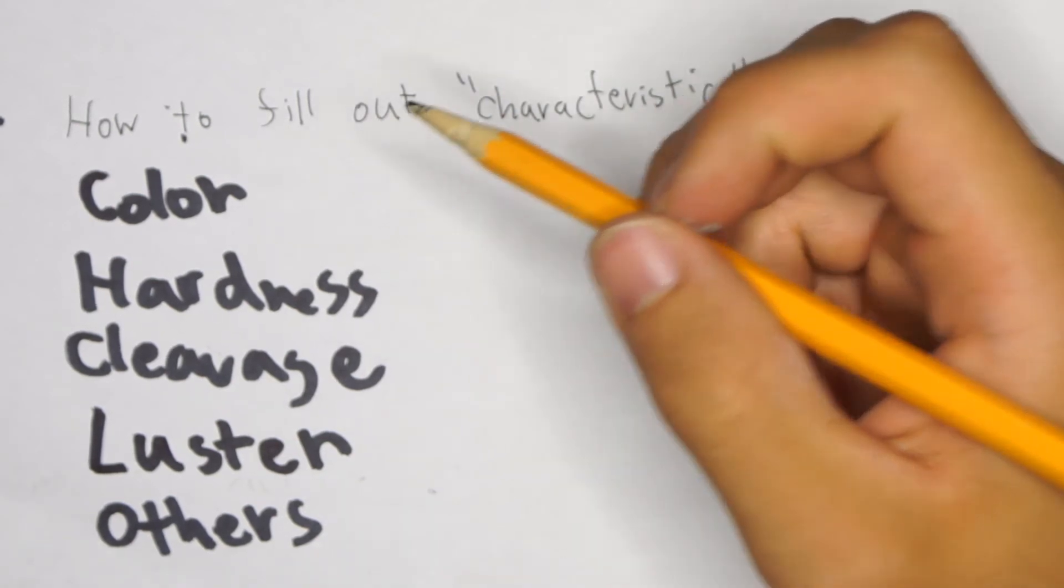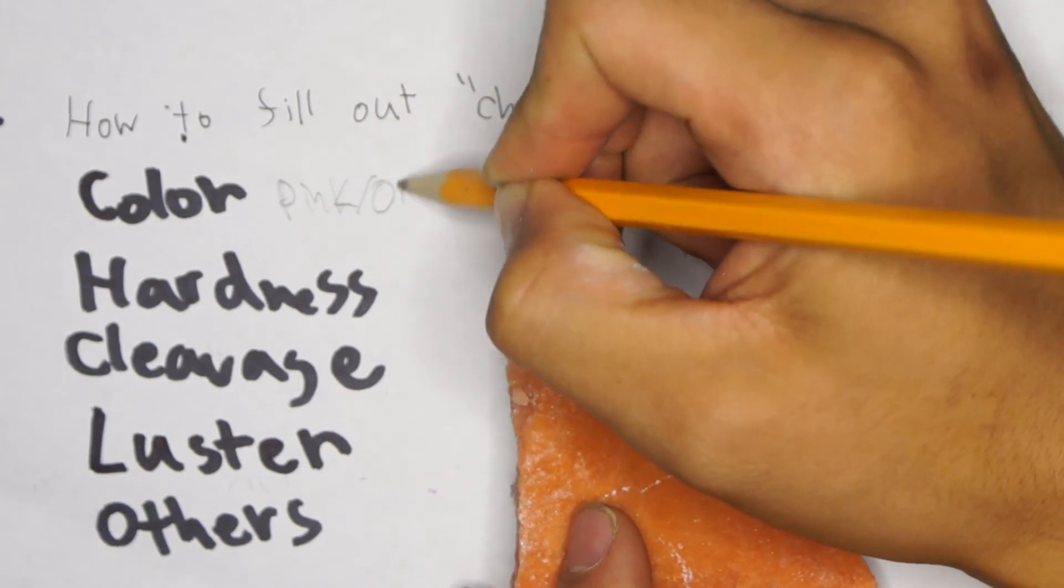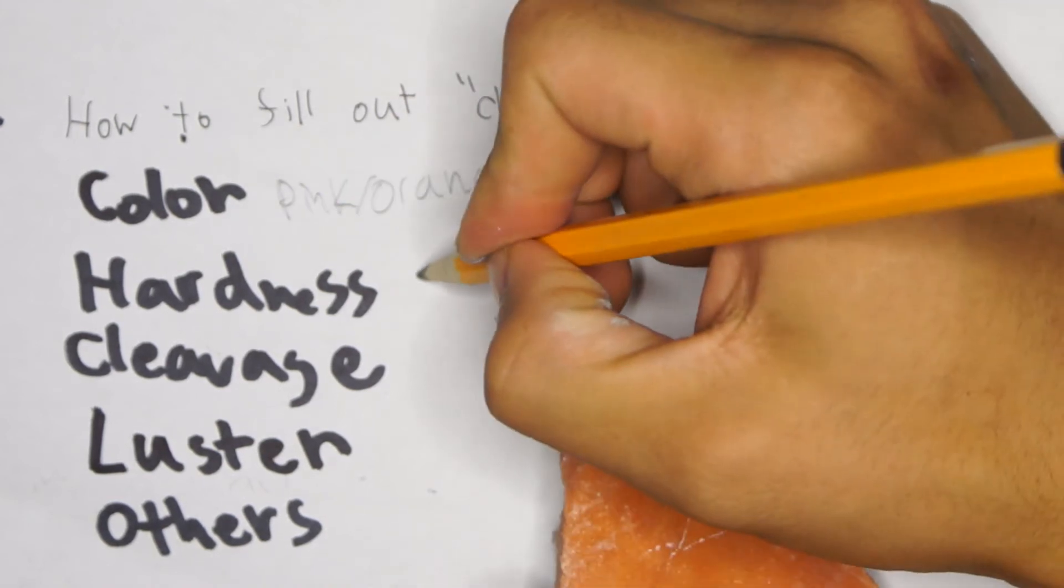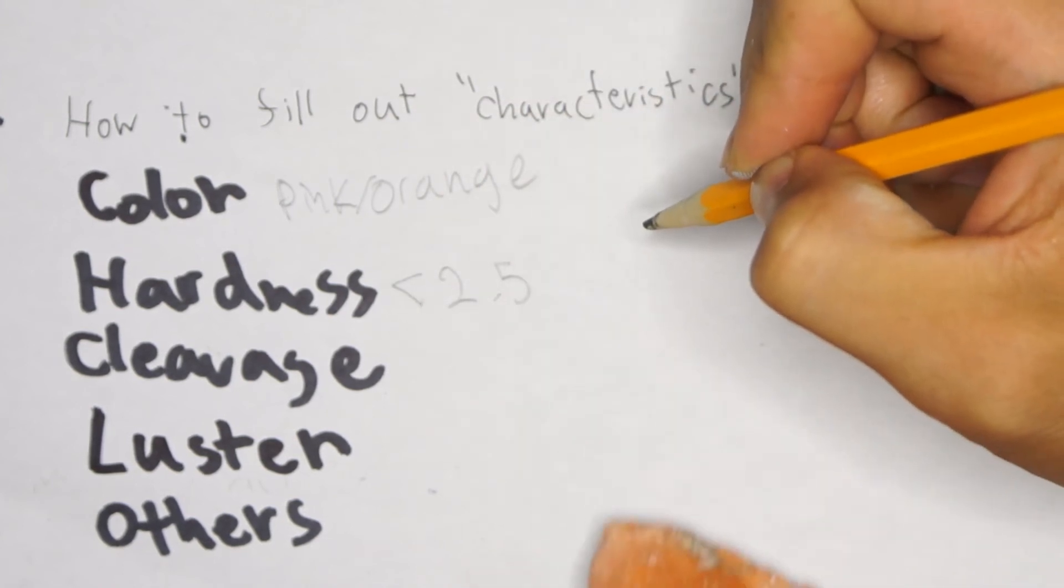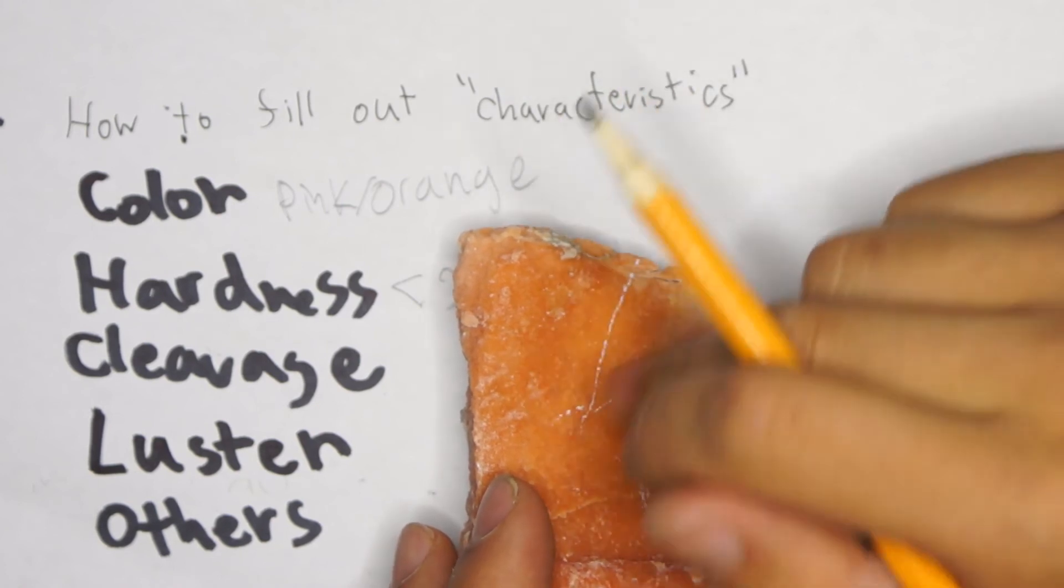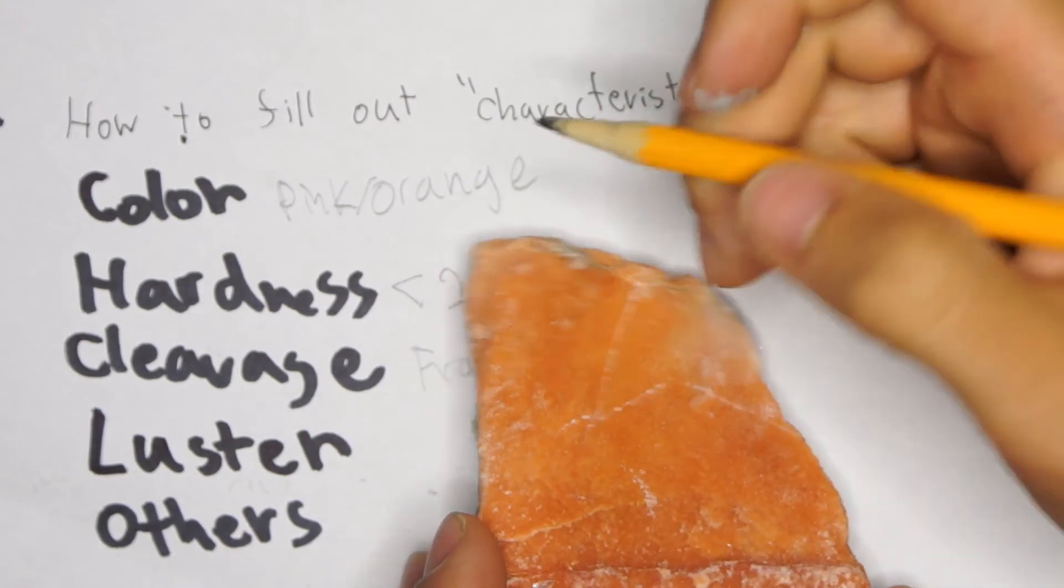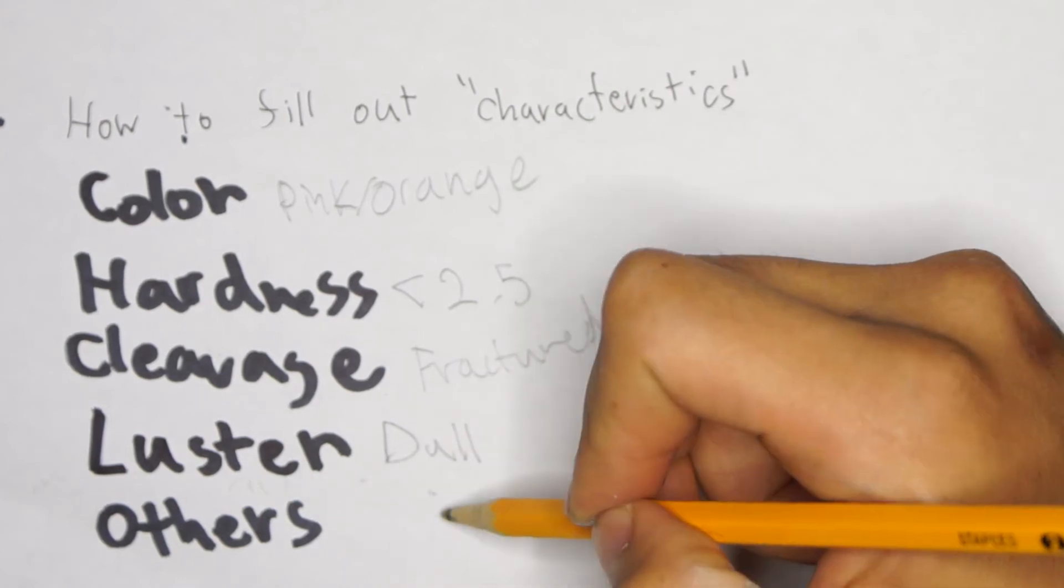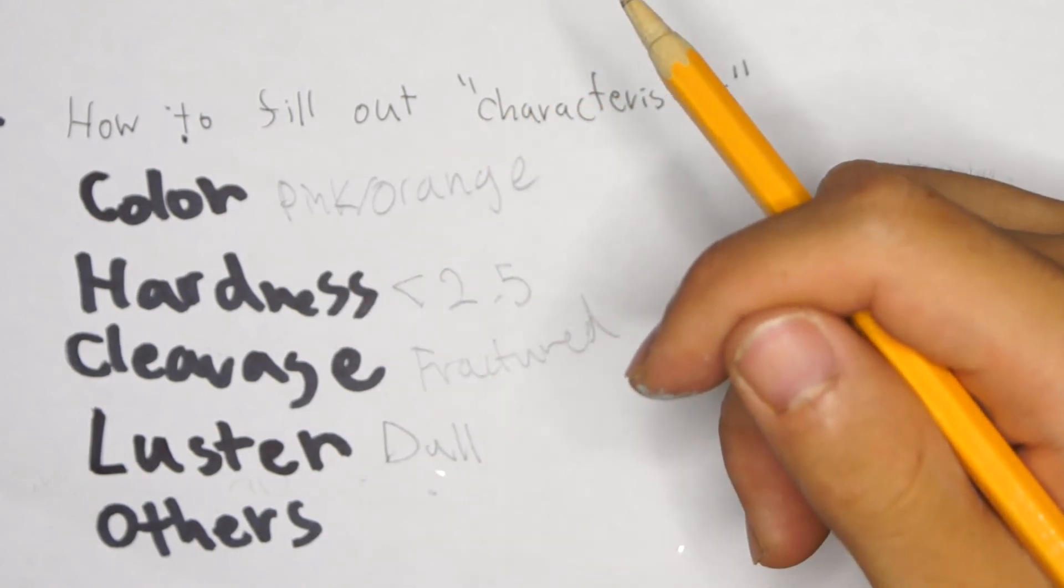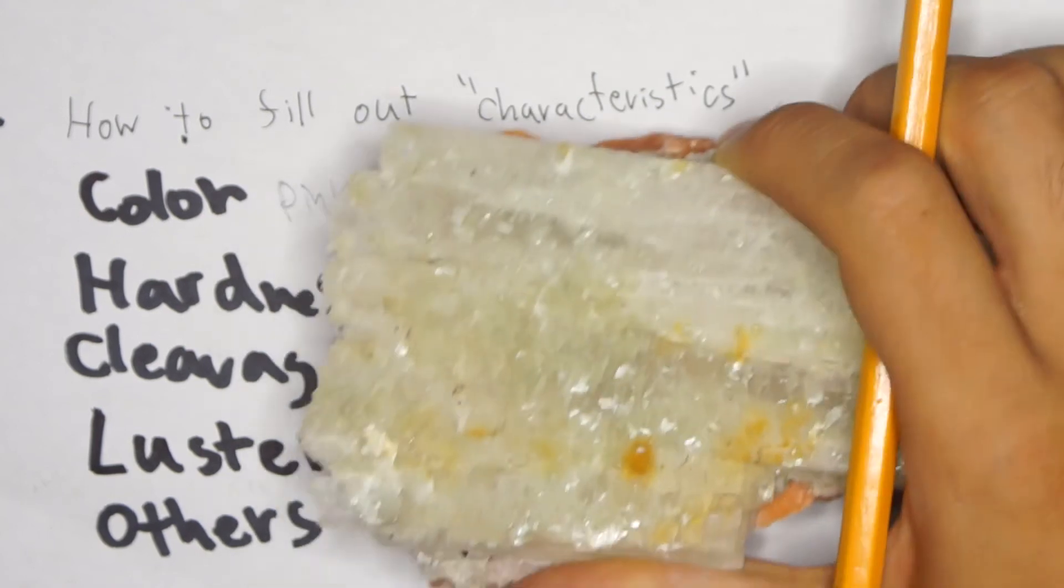So going on to color as an example, this rock looks like a pinkish orange, so you can say pink orange. You don't have to be very specific at all. This rock I happen to know has a hardness of less than 2.5. And then cleavage, well, this rock doesn't have any visible cleavage, at least for this part of the mineral, so you could just say fractured in this case. Luster, so dull luster. And then others. Others don't apply to this, but some minerals will be magnetic. So that's something that you could write as an other.